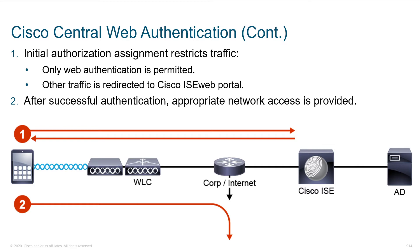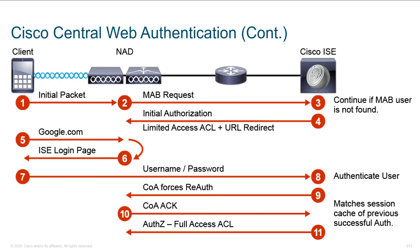Looking at CWA, the initial authorization assignment is going to restrict traffic. If we can't authenticate someone with 802.1x, we'll give them an IP address, put them in a limited VLAN, and wait for them to generate some web traffic. Once we see that HTTP traffic, it gets redirected to a portal where they authenticate, and then they receive the appropriate level of access to the network environment.